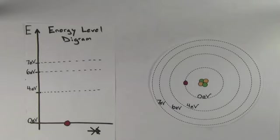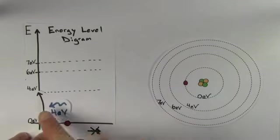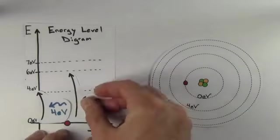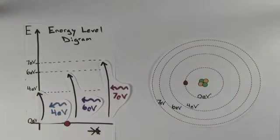Alright, so now we can figure out every possible photon this atom could absorb. If the electron's in the ground state, it could absorb a 4 eV photon, or a 6 eV photon, or a 7 eV photon.